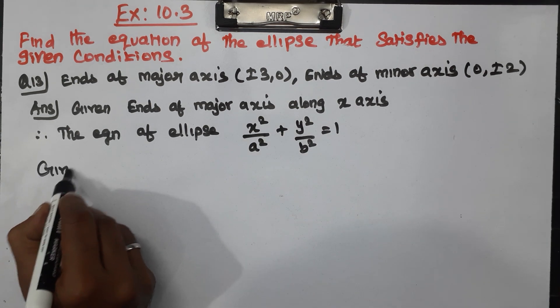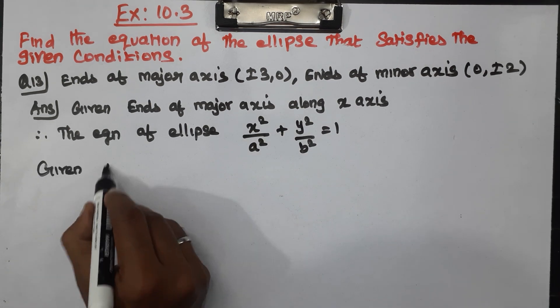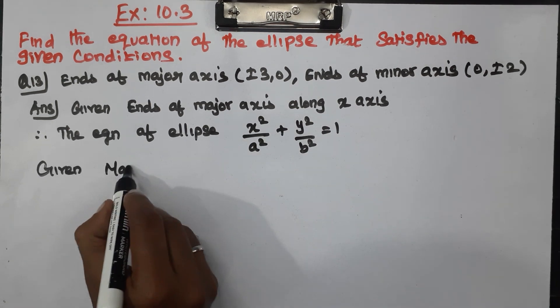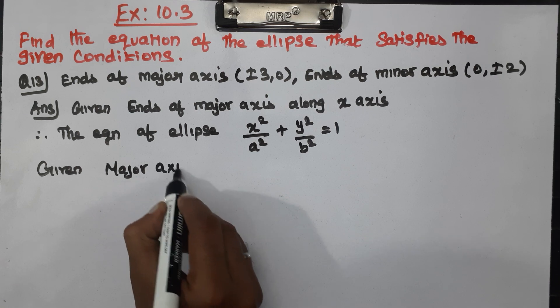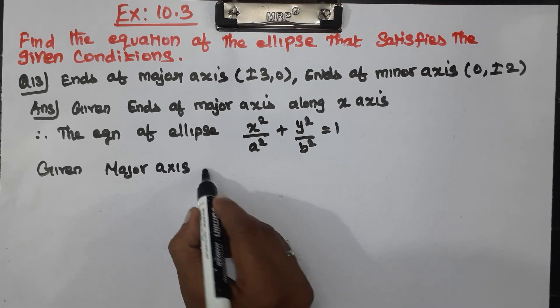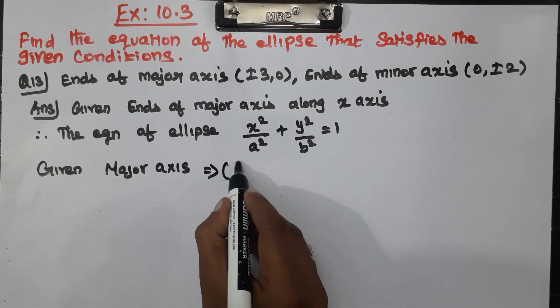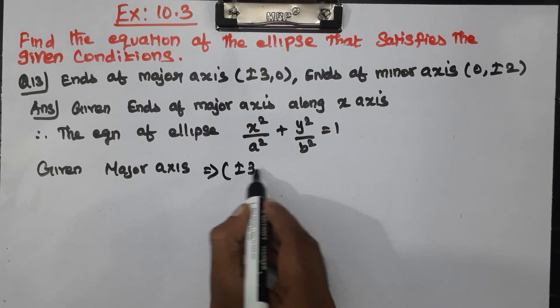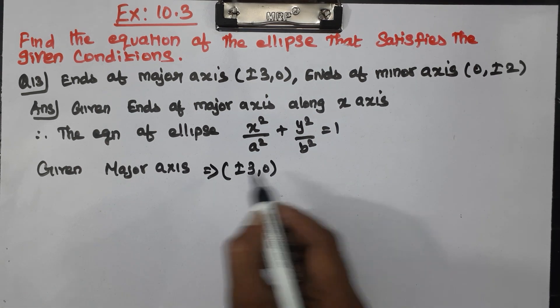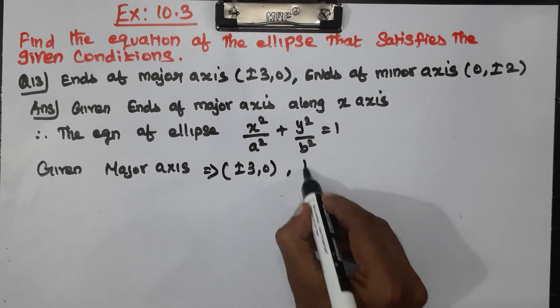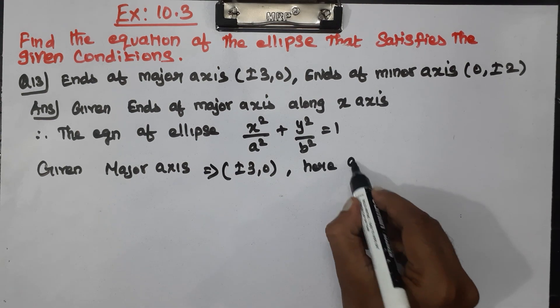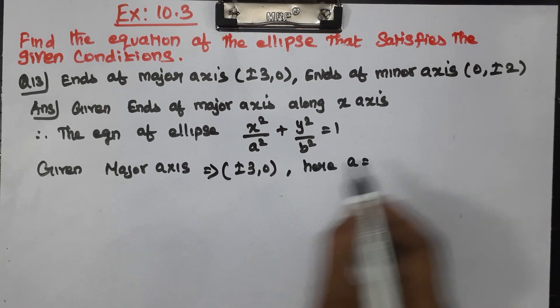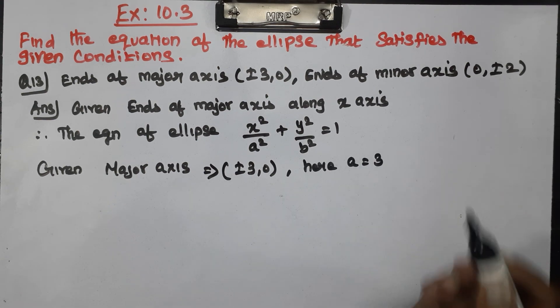Given: the major axis is at plus or minus 3, 0. So here, the value of A is 3.